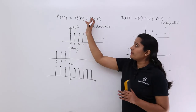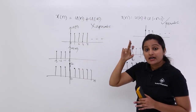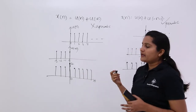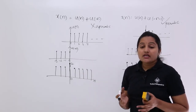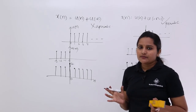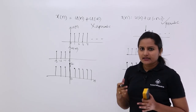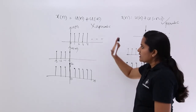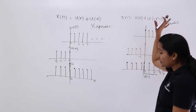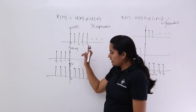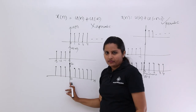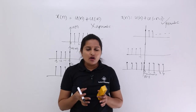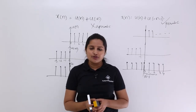Always remember: the combination u(n) plus u(-n-1) is periodic, but do not say u(n) plus u(-n) is periodic. In continuous time signals, you can consider u(t) plus u(-t), and sometimes practically it may appear periodic, but theoretically there is also a problem with periodicity. Coming to discrete signals, u(n) plus u(-n) is NOT periodic — only u(n) plus u(-n-1) is periodic. This is how we need to answer about the periodicity of a discrete unit step signal.